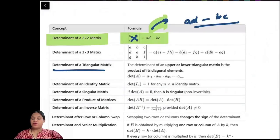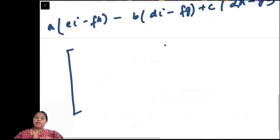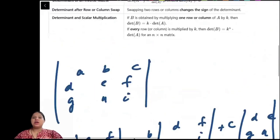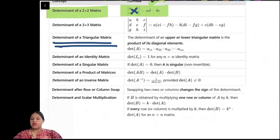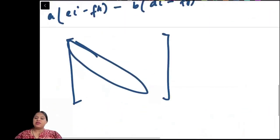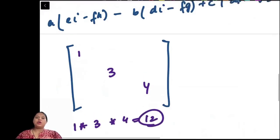The determinant of a triangular matrix, whether upper triangular or lower triangular, will be the product of its diagonal elements. So if you have a diagonal matrix with elements 1, 3, and 4 in the diagonal, the determinant will be 1 times 3 times 4, which equals 12.